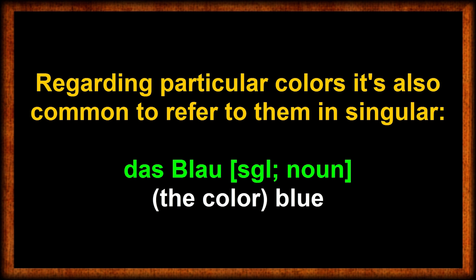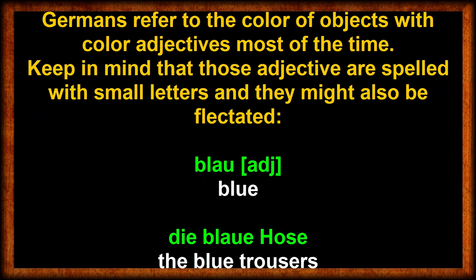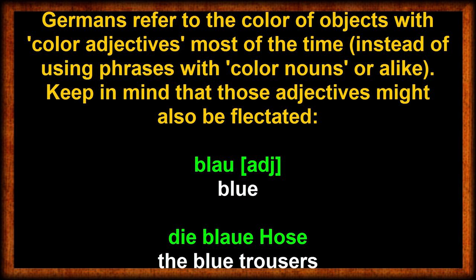You also have to spell the color with a capital letter, since this counts for all German nouns. Das Blau is the color blue. In case you refer to a color as an adjective, you spell it in small letters and you might have to inflect it. So blau might turn to blaue — for instance in die blaue Hose, the blue trousers.